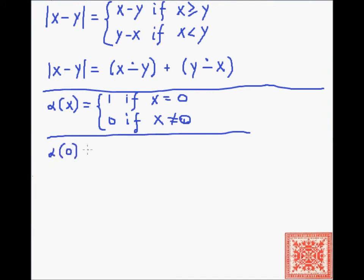So alpha of zero equals one, then alpha of x plus one equals zero. This is one way to define it using the first definition of primitive recursion. Here's another way of defining it using what we have shown so far.